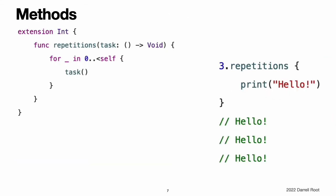Methods. Extensions can add new instance methods and type methods to existing types. This example adds a new instance method called repetitions to the int type. The repetitions task method takes a single argument of type empty tuple to void, which indicates a function that has no parameters and does not return a value.